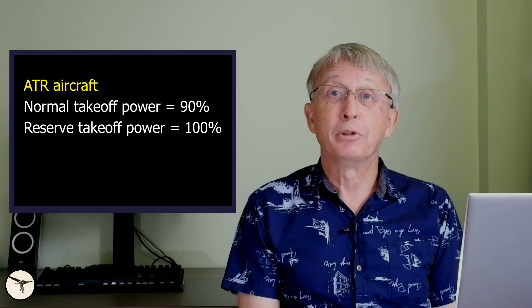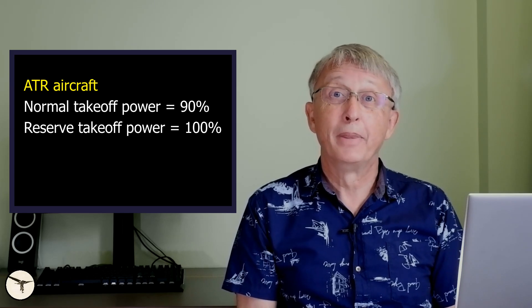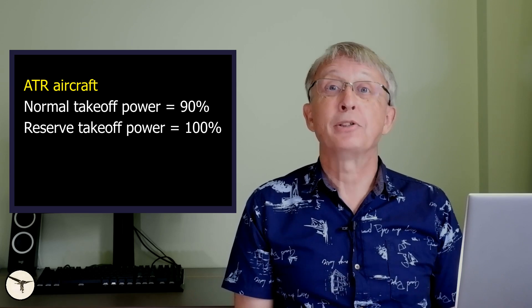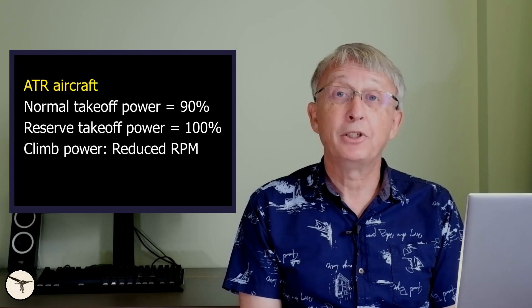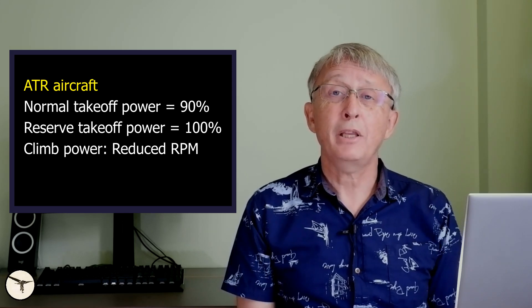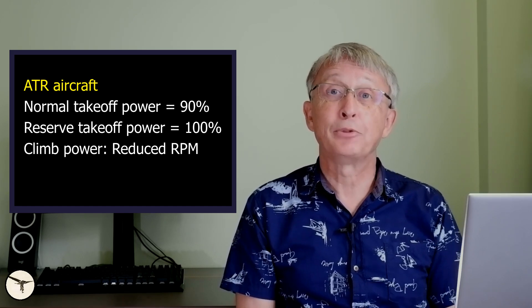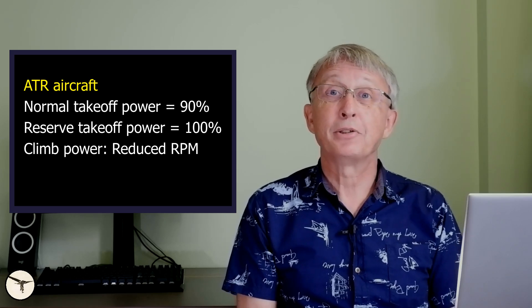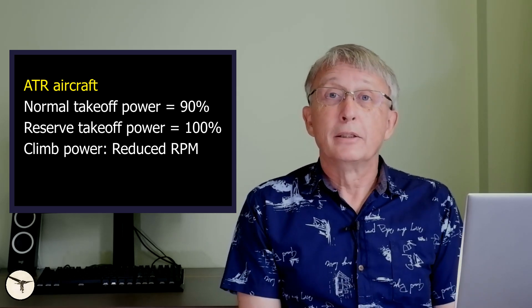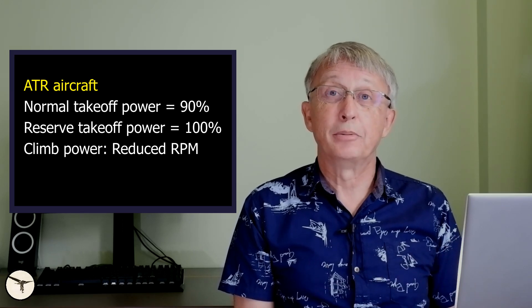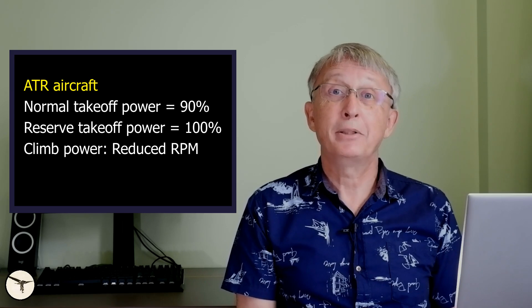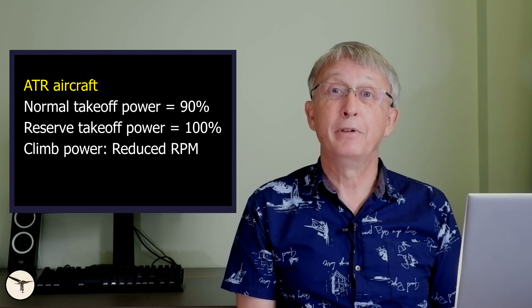Normal takeoff power is what we call reduced thrust for a jet engine. And for ATR the standard takeoff power is 90%. You also have reduced climb power settings similar to the jets. We have climb power which is standard power for climb. And after takeoff we set climb power when at least 400 feet above the runway. It depends on the terrain and obstacles. So that reduces the RPM of the propeller which reduces the noise. We don't need noise abatement procedures. The turboprop is already very quiet.